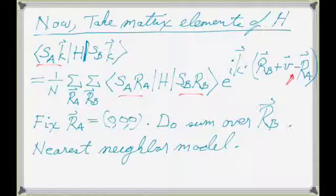The sum over R_B will only have four terms — the four nearest neighbors — just like in 1D it only had two terms: one to the right and one to the left. Now we have four terms for the four nearest B atoms. We just need to figure out where they are.